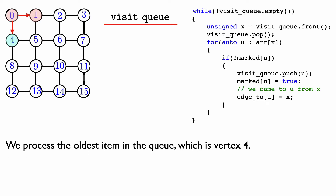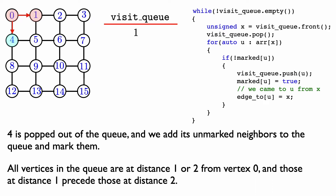Now we continue to the next iteration of the while loop. We process the oldest item in the queue, which is vertex 4. We pop vertex 4 out of the queue and add its unmarked neighbors — vertex 8 and vertex 5 — to the queue. Vertex 0 is not added even though it's a neighbor, because it's already marked. Now all the vertices in the queue are at distance 1 or 2 from vertex 0, with those at distance 1 coming first.